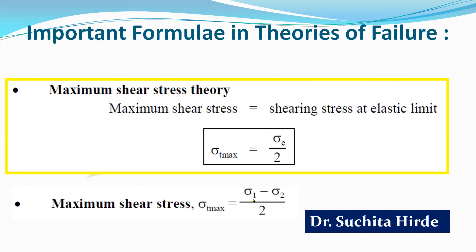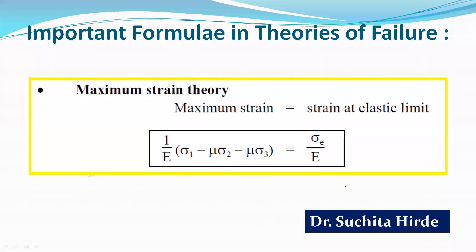This shear stress is equated to the shearing stress at the elastic limit. Next is maximum strain theory, also called maximum principal strain theory or St. Venant's theory. In this, we calculate the strain — stress divided by modulus of elasticity gives strain. The strain calculated using the tension test is equated to the actual maximum strain in the member subjected to three-dimensional stresses, with principal stresses sigma_1, sigma_2, and sigma_3 in three directions. Equating these two gives the unknown quantities.